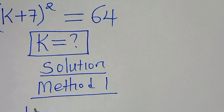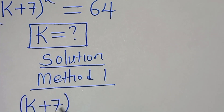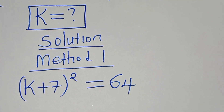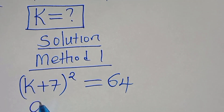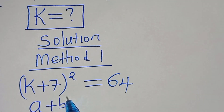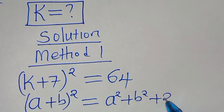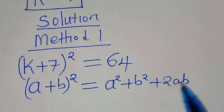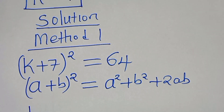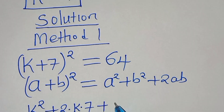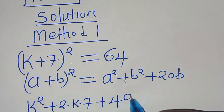Method 1: We have (k + 7) raised to the power of 2, equal to 64. Since (k + 7)² is in the form (a + b)², we expand it as a² + 2ab + b². Applying this algebraic identity, we get k² + 2·k·7 + 7².